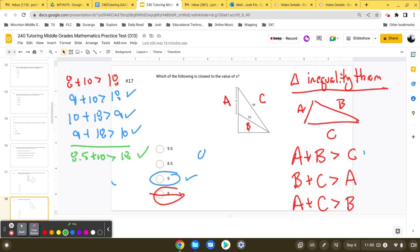So let's do the second one. B plus C is greater than A. So B plus C, so 10 plus 18 is greater than 8.5. Check. That works. And let's check the last one. A plus C. So that would be 8.5 plus 18 is greater than 10. Check. So that one also works.